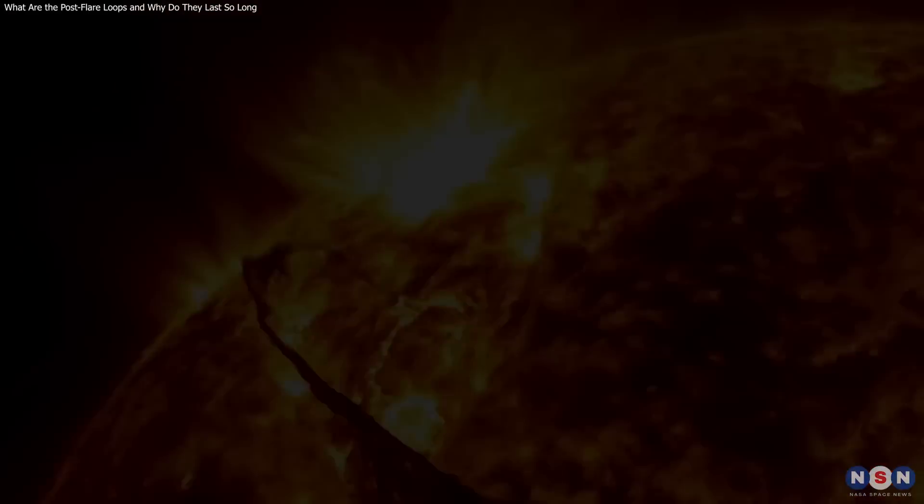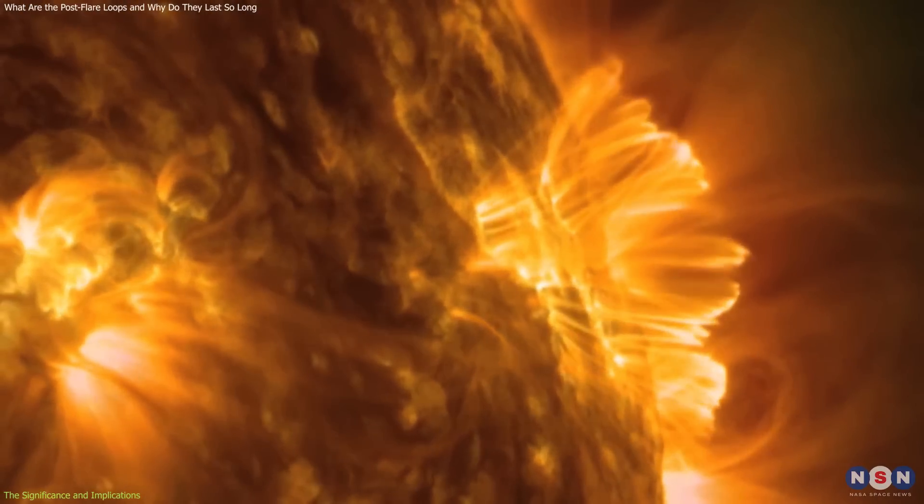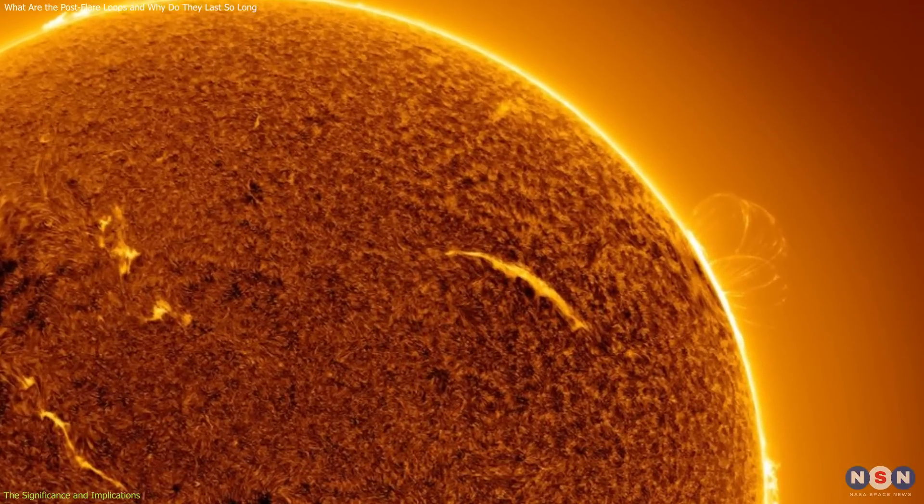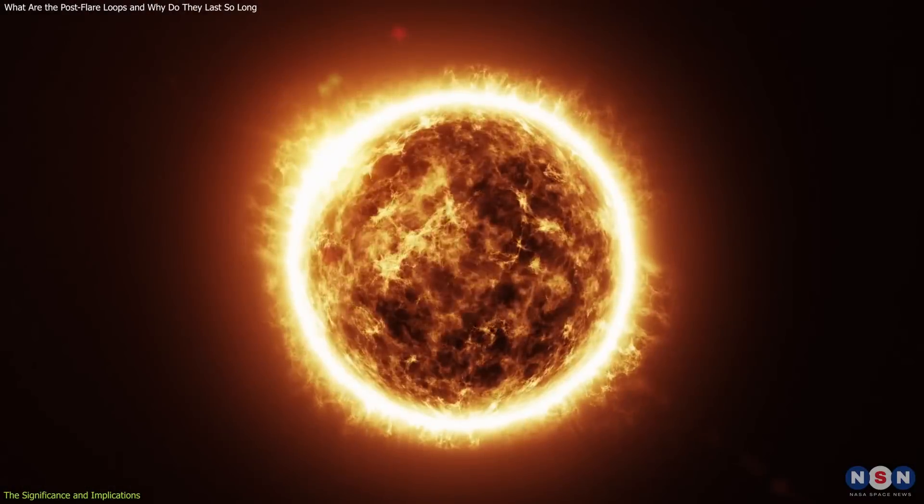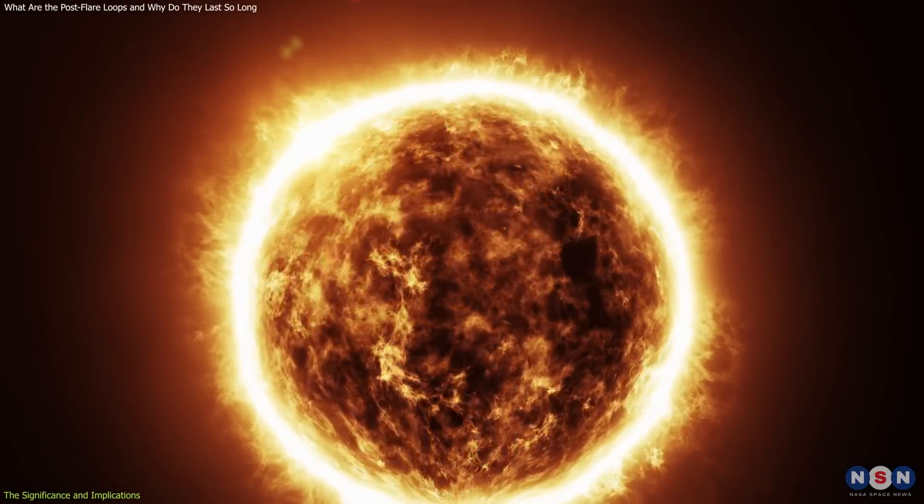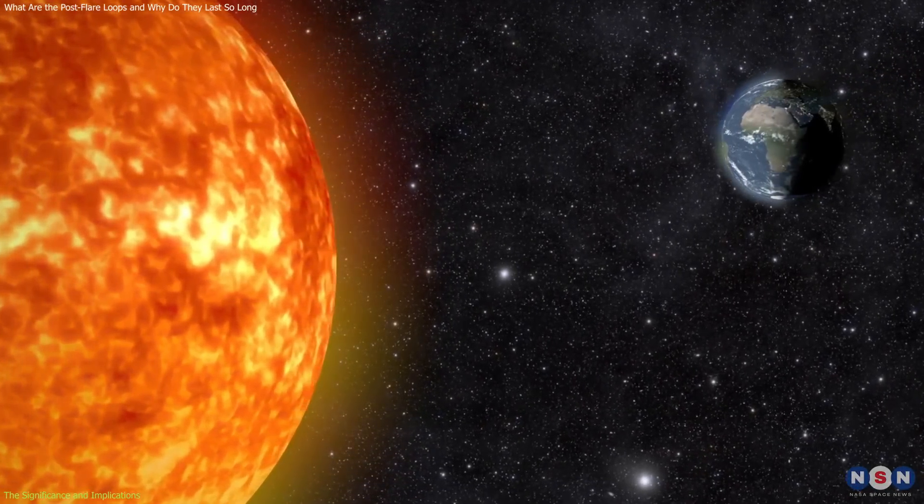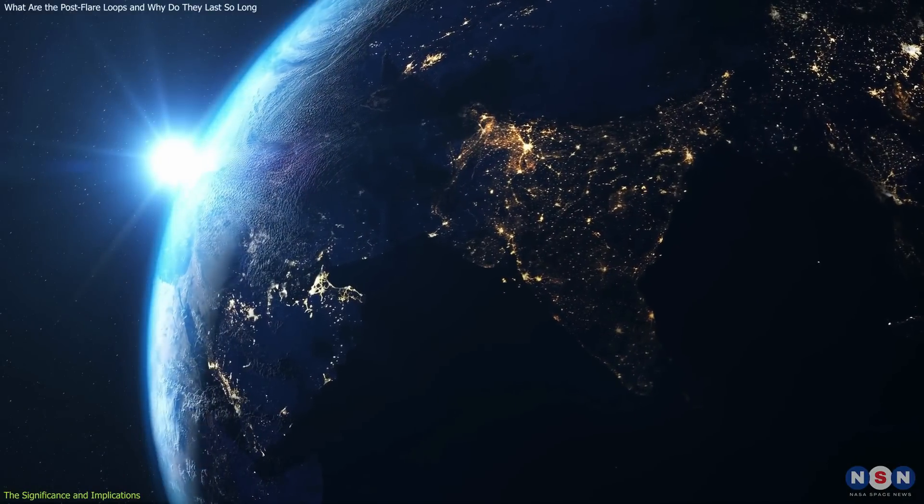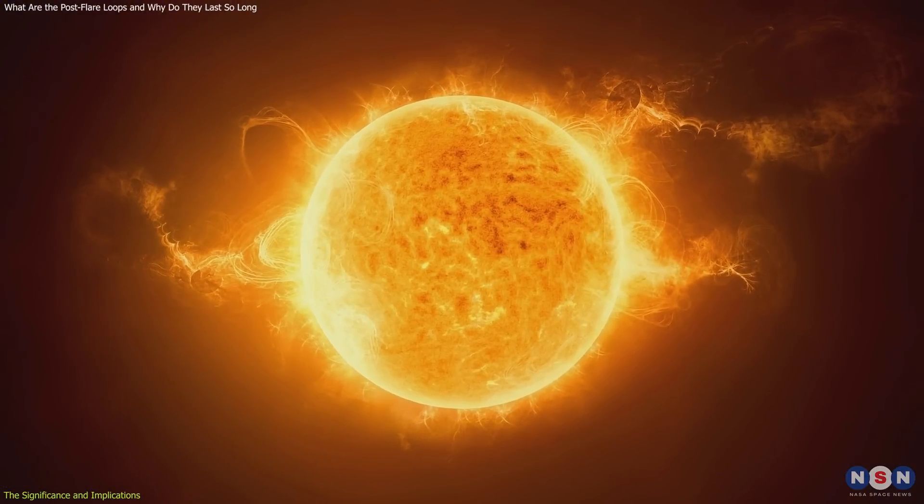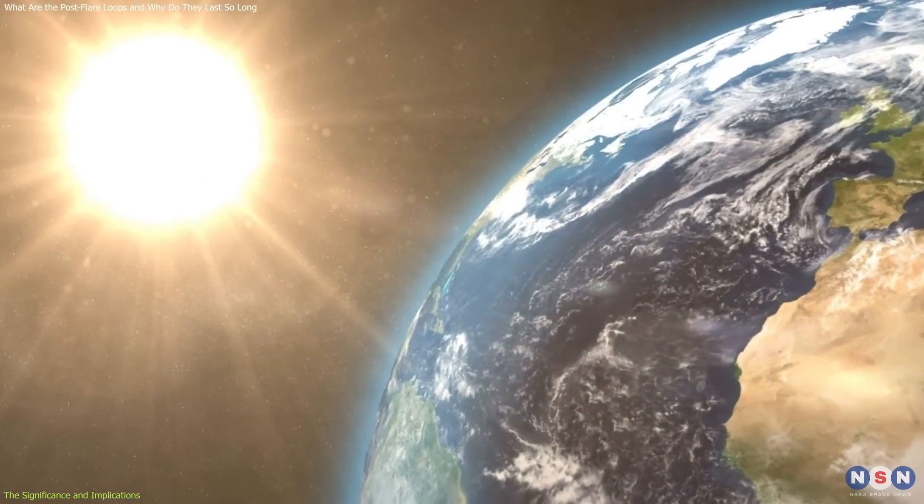The solar storm and the post-flare loops that occurred on January 29, 2024, are not only spectacular to watch, but also significant and relevant for our knowledge and future. Studying these events can help us to learn more about the sun and its activity, which is crucial for many reasons. First, the sun is the source of life and energy for our planet, and it affects our climate and weather in many ways. By understanding how the sun works and what causes its variations, we can better predict and prepare for its impacts on our environment and society.